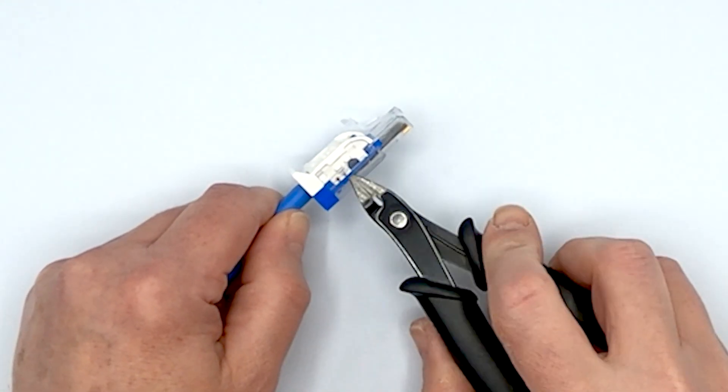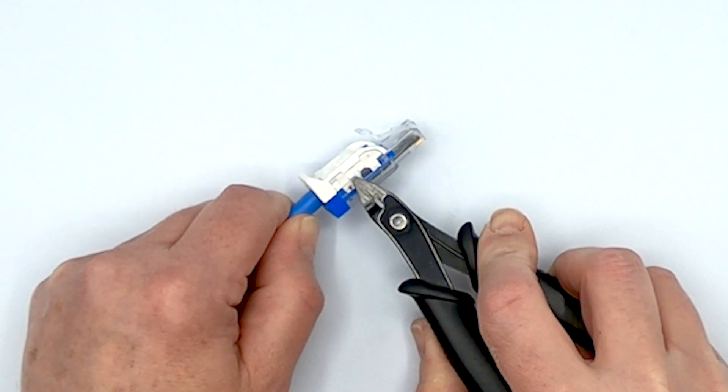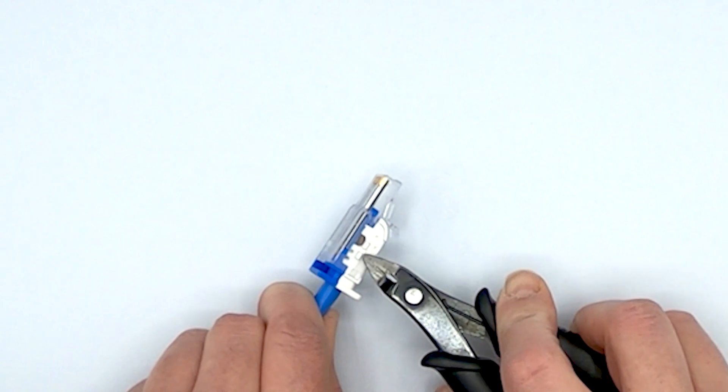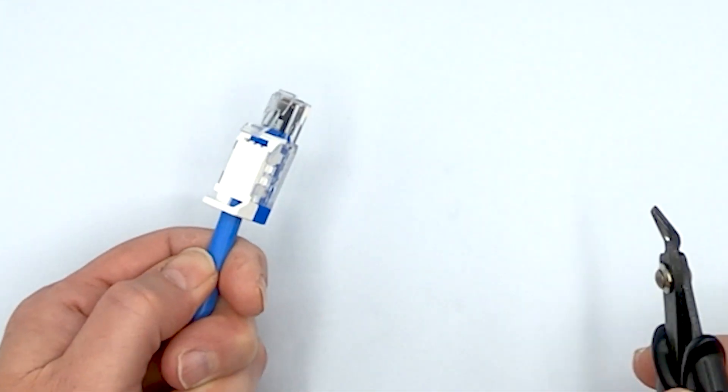All right. So to make sure this thing's closed all the way, you should have two tabs that are going into the plastic here and they're latched in there. And on the other side, you should have the same thing. So we've got two tabs latched into the plastic. So it's terminated.